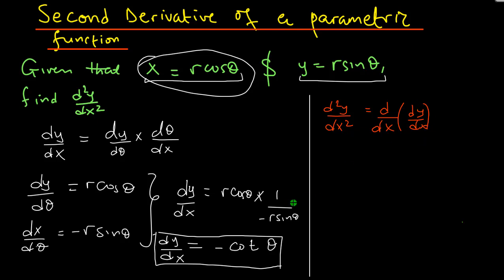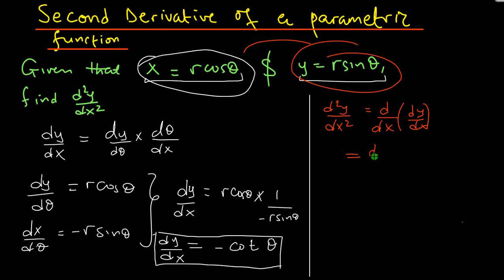The problem is that the first derivative is a function of theta, so we can't just take its derivative with respect to x directly. You could replace cotangent of theta using the x and y equations, but that would be a harder approach. Instead, I'm going to take the derivative with respect to theta of the first derivative dy over dx, and then multiply by d theta over dx — using the chain rule so that these cancel and we get the derivative with respect to x of dy over dx.